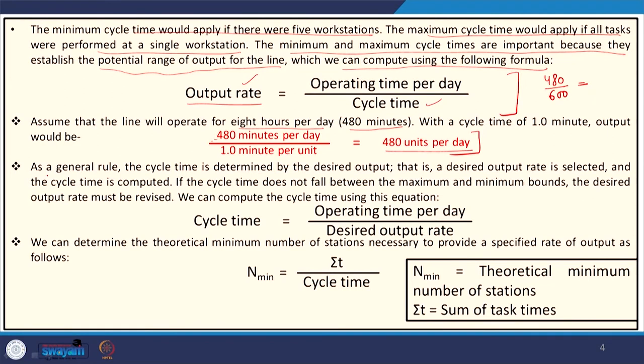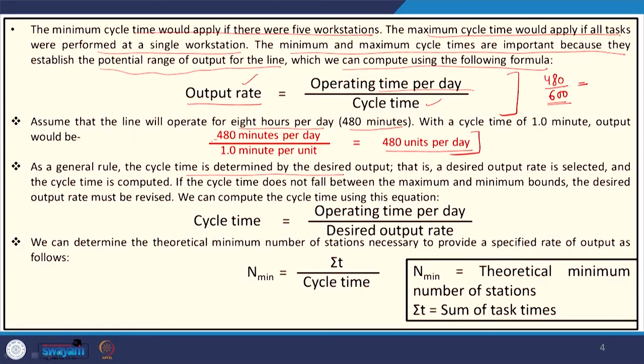There is a close relationship between output rate and cycle time. As a general rule, the cycle time is determined by the desired output rate — a desired output rate is selected and the cycle time is computed. If the cycle time does not fall between the maximum and minimum bounds, the desired output rate must be revised. We can compute the cycle time using the formula: operating time per day divided by desired output rate.